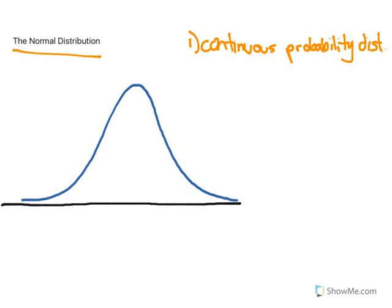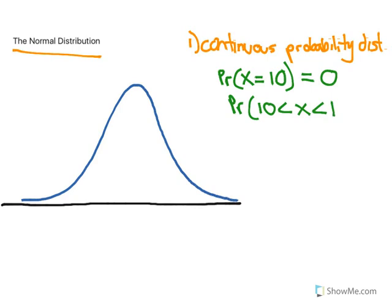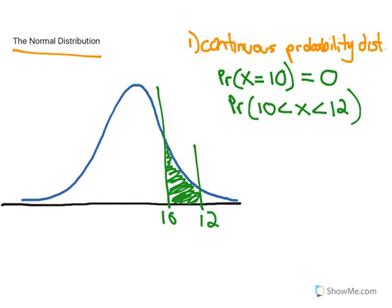When we're talking about continuous random variables, we can't say what's the probability that x equals some value, say 10, because this probability is zero. A continuous random variable has zero probability of landing on any one exact value. Instead, we might ask something like, what's the probability that x falls between 10 and 12? On the curve, maybe 10 and 12 are somewhere here. We want to find the probability that our random variable x falls between these two values. We do that using the normal distribution by calculating the area under the curve between those two values — the answer to that probability is the area highlighted in green.